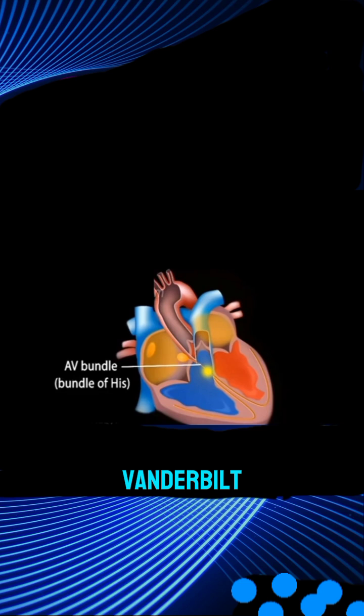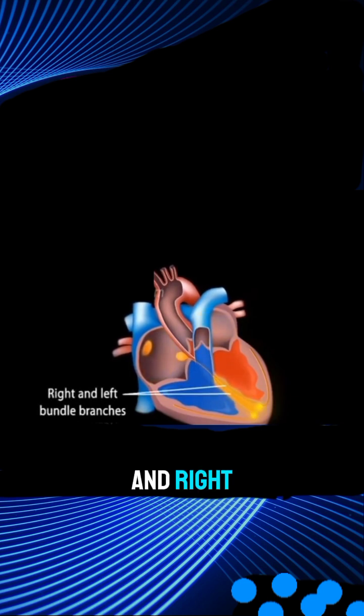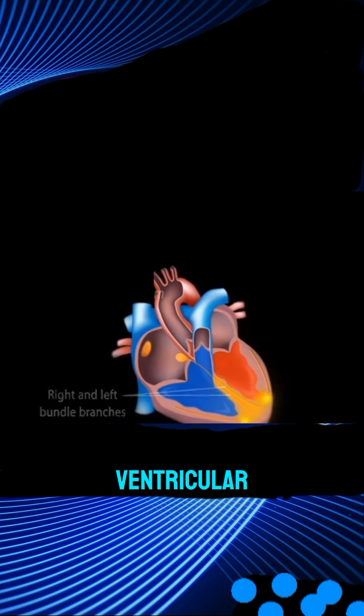The AV node receives signals from the atrial and sinoatrial nodes and passes them to the bundle of His, which splits into left and right branches that carry impulses toward the heart. These impulses are then passed to the Purkinje fibers.